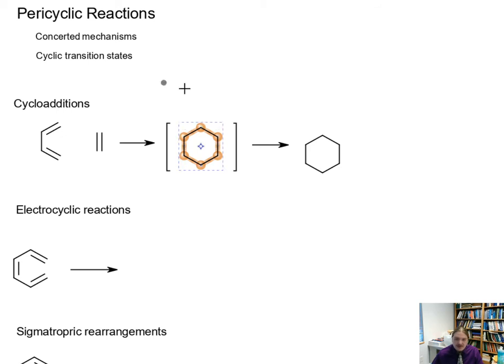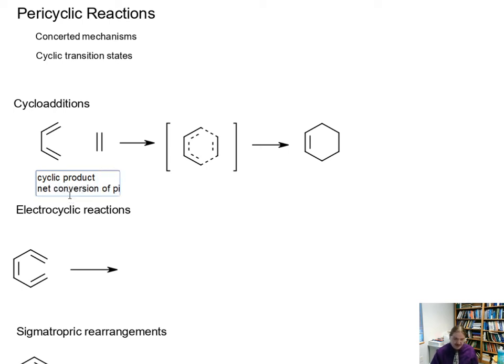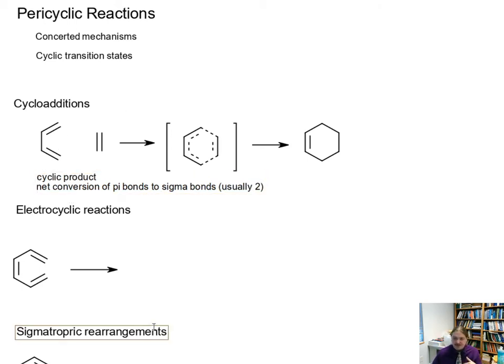What I'm drawing here are the transition states for the Diels-Alder reaction and the product. All cycloadditions involve two molecules coming together and forming a cyclic product. In all cycloadditions, there is a net conversion of pi bonds to sigma bonds, and we're usually exchanging two pi bonds for two sigma bonds.